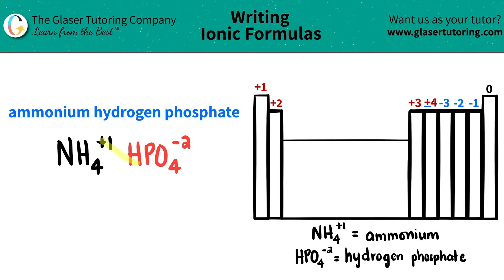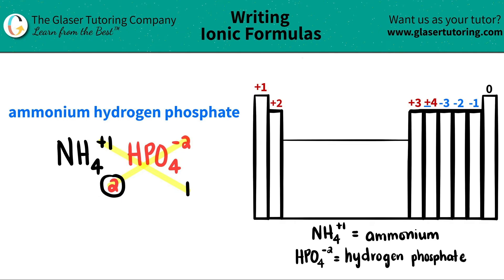So this plus one crisscrosses down telling me that I just need one hydrogen phosphate, and this negative two crisscrosses down telling me that I need two ammoniums. So now I'm ready to write the formula. But here's the thing — if you see that you have multiple polyatomics, in this case I have two ammoniums, I need to use parentheses.